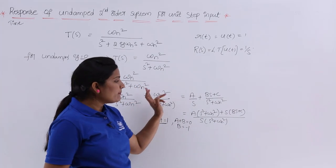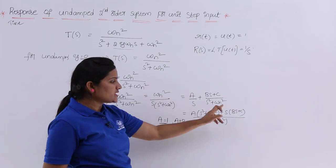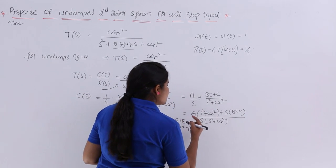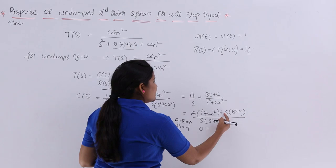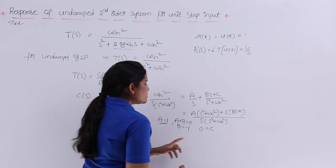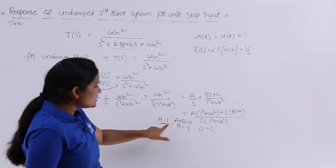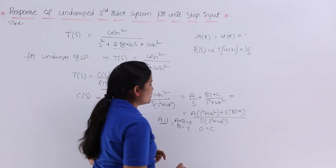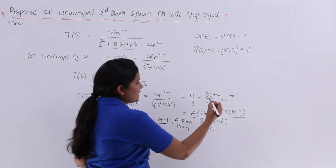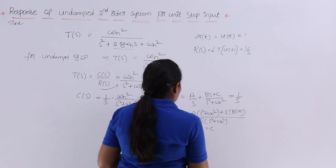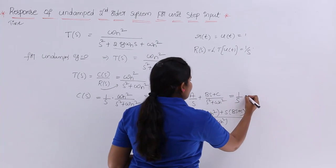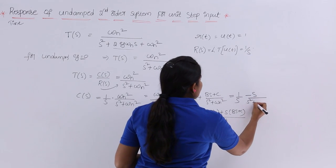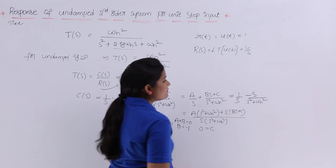With A = 1, B = −1, and C = 0, substituting back into the partial fraction expression gives C(s) = 1/s − s/(s² + ωn²). This form is now suitable for applying standard inverse Laplace transform pairs directly.